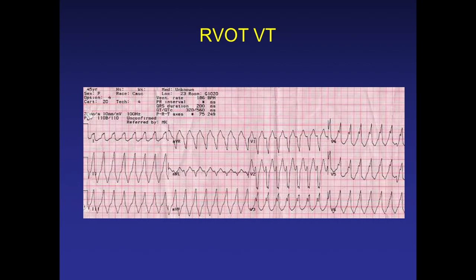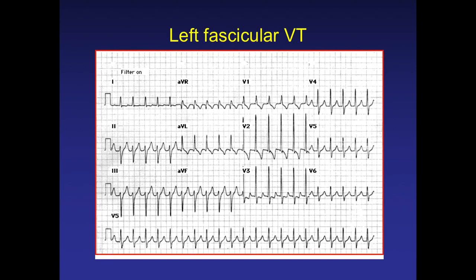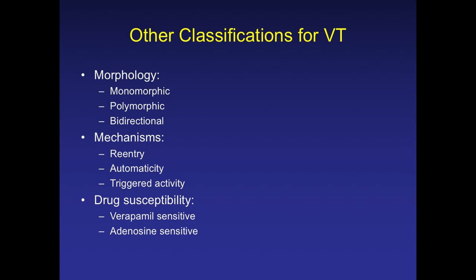In the inferior leads, the complexes all point upward — all positive — confirming origin from the outflow tract of the right ventricle. Applying the same logic, this is a left ventricular outflow tract VT. This is fascicular VT: it shows right bundle branch block morphology, and with lead I positive and lead II negative, that is left axis deviation, confirming left fascicular VT. VT can also be classified as monomorphic, polymorphic, or bidirectional, and by mechanism: re-entry, automaticity, or triggered activity.